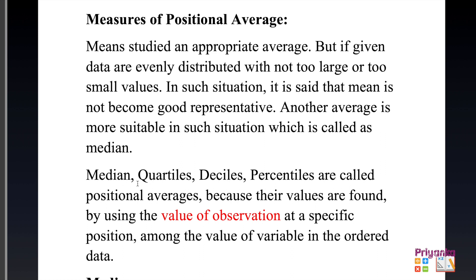Median, quartile, decile, and percentile are called positional averages because their values are found by using the value of observations at a specific position among the values of the variable in the ordered data.